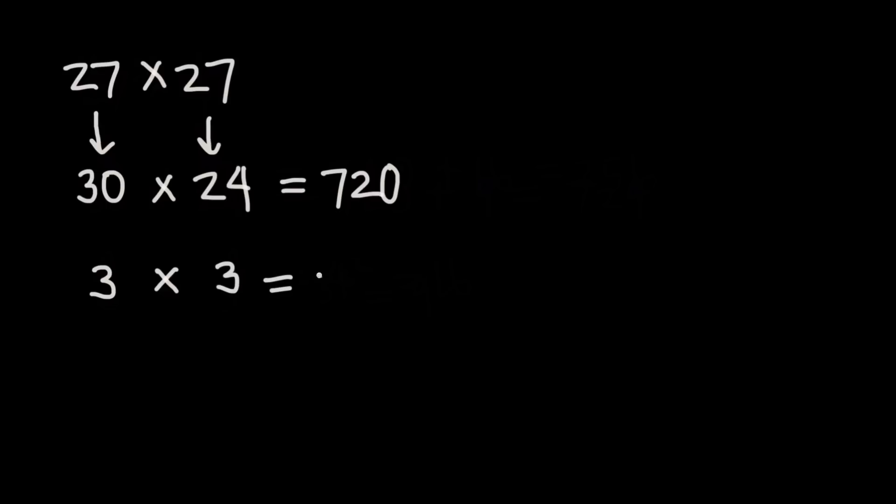So 3 times 3 is going to be 3 squared or 9. So this value here is what we want to add to the 720 that we got. So 720 plus 9 gives us 729. And 729 is actually the value of 27 times 27.